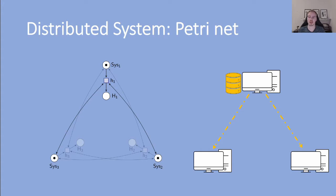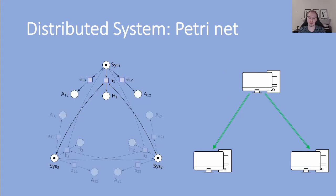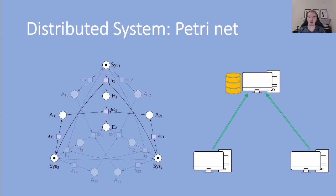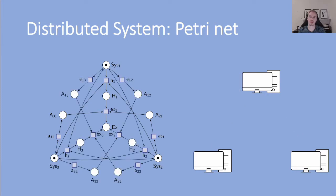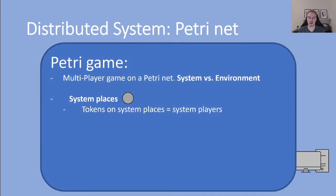A computer can also connect itself to another computer, and a program can only be executed if one computer is hosting and the other two connected to it. In our example, this is the behavior of the system, and we color these places gray and call them system places. A token on such a system place is a system player.